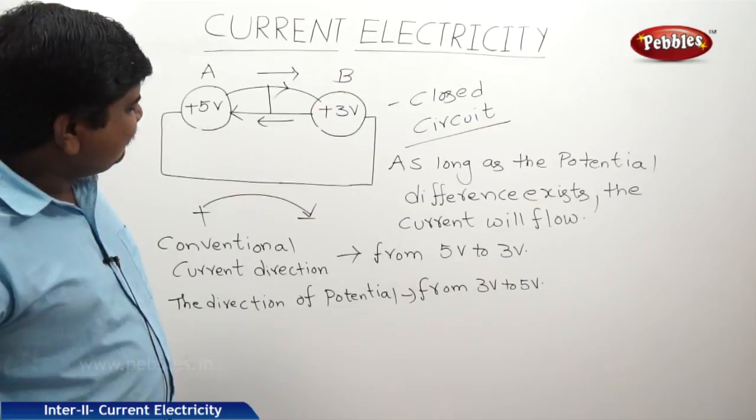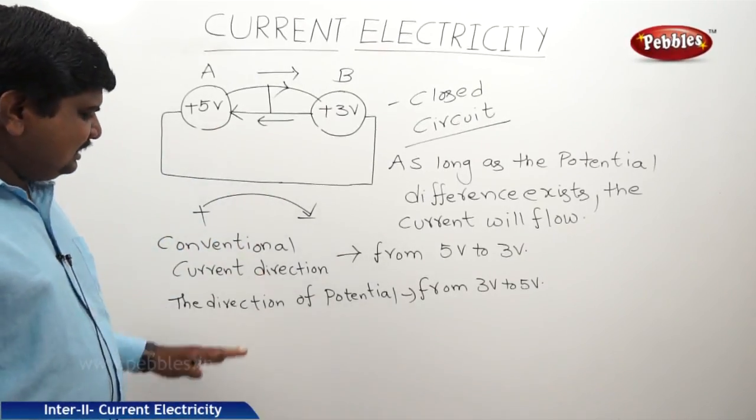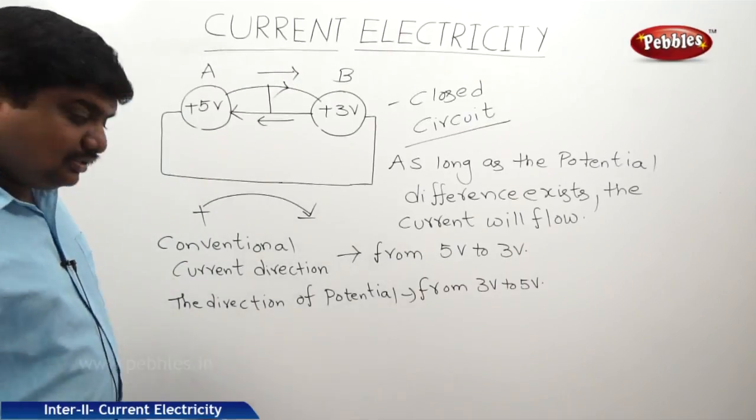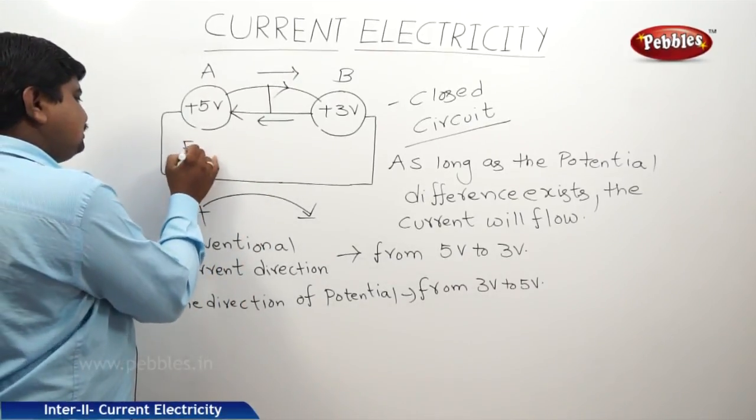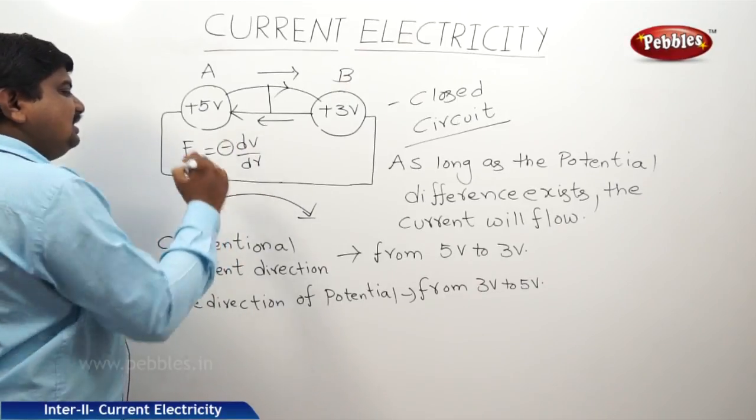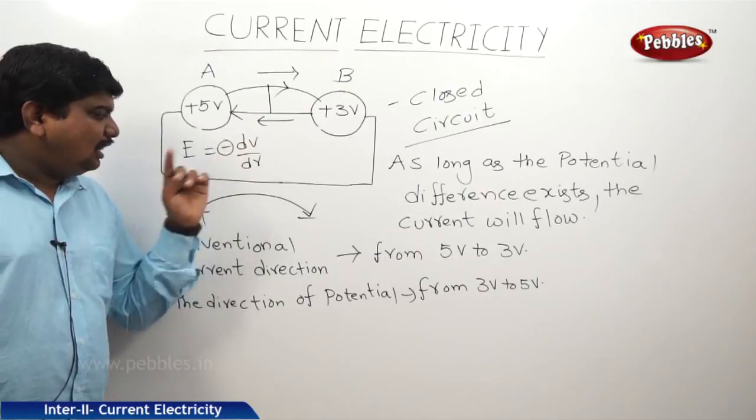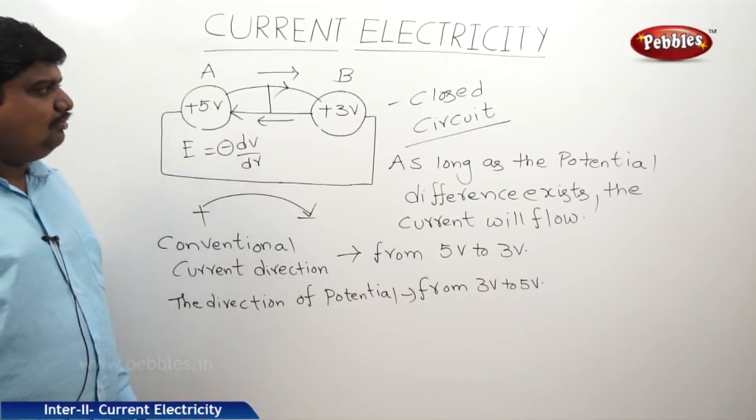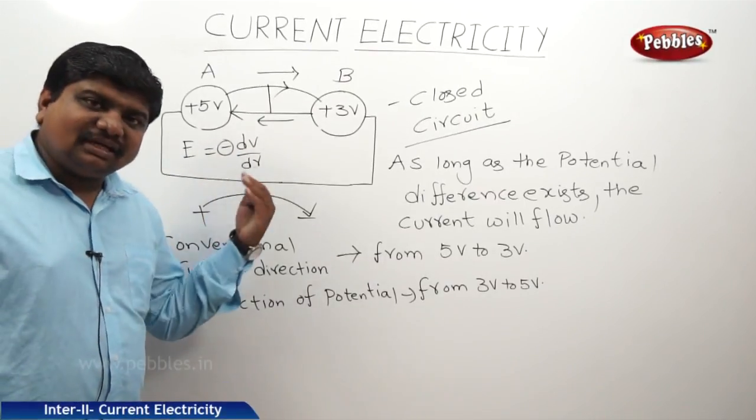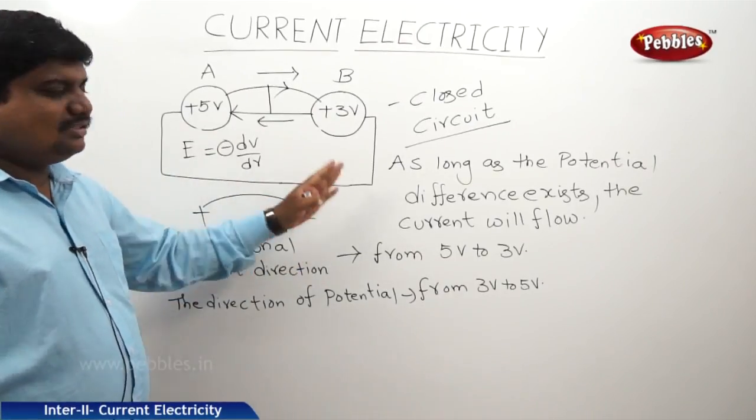These two are opposite to each other. So, there is a relationship between the electric field and potential. This is the relationship between E and V. That is why in potentials we have E is equal to minus dV by dr. This minus indicates the opposite in direction. E and V are same in nature but opposite in direction. Now, we will discuss what is current, what is its SI units and dimensions, then different factors that affect the flow of current.